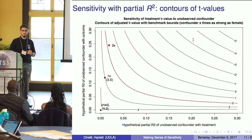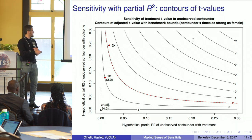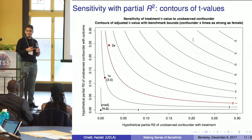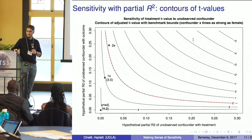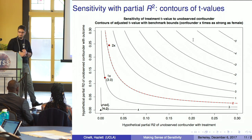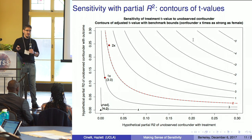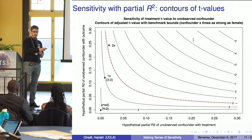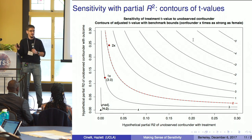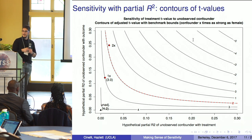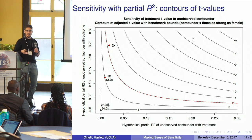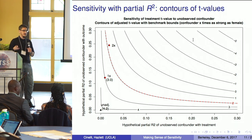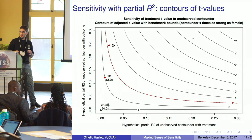The sensitivity analysis of statistical significance shows that the estimate is still robust to a confounder as strong as female, but we cannot guarantee robustness to a confounder twice as strong as female. Now it's the expert's job to argue against this case or concede that they cannot be sure and consider what further research steps are needed. We're moving from a qualitative discussion to a quantitative one: is it plausible there's something twice as strong as female? Can you name it?